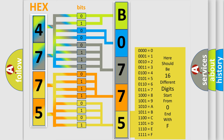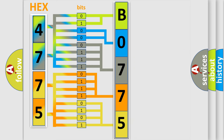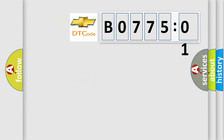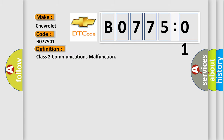We now know in what way the diagnostic tool translates the received information into a more comprehensible format. The number itself does not make sense to us if we cannot assign information about what it actually expresses. So, what does the Diagnostic Trouble Code B077501 interpret specifically for Chevrolet car manufacturers? The basic definition is: Class 2 communications malfunction.